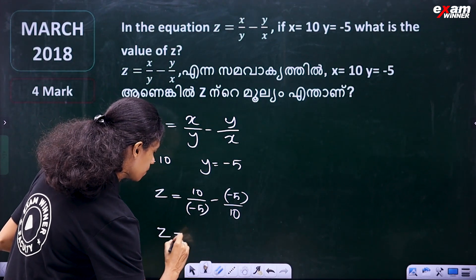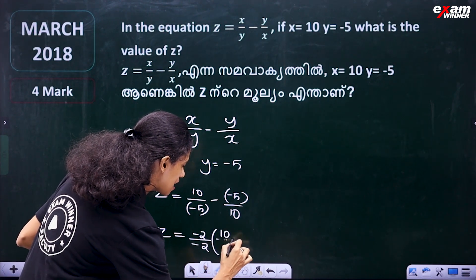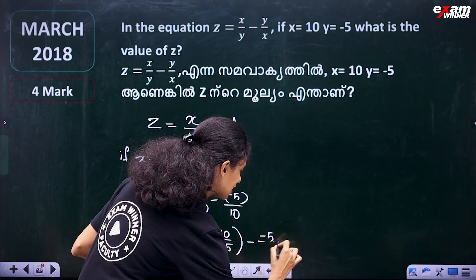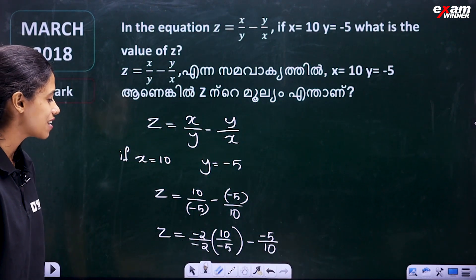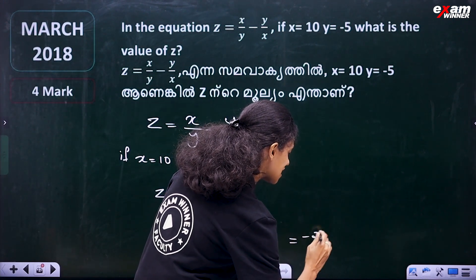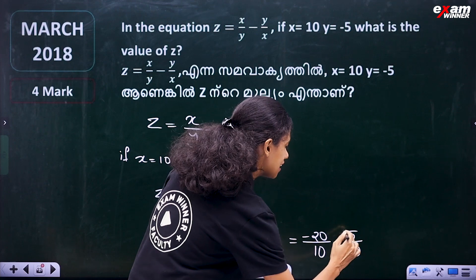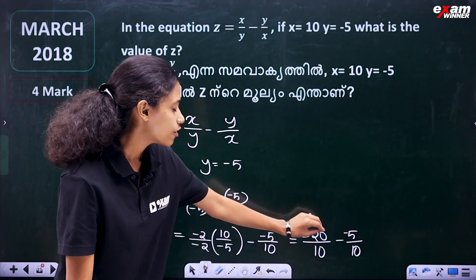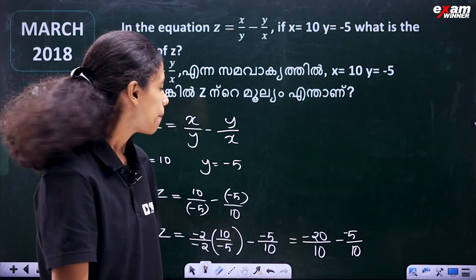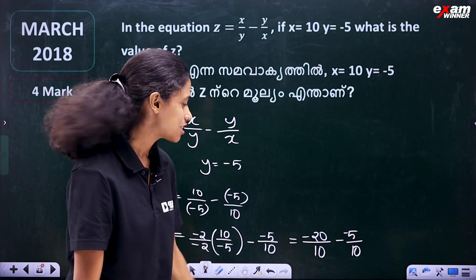Then z is equal to 10 by minus 5, minus minus 5 by 10. That gives us minus 20 divided by 10, minus minus 5 by 10. The denominator is the same, so we subtract: minus 20 minus minus 5, which equals minus 20 plus 5.